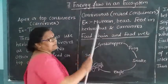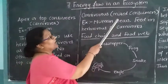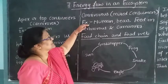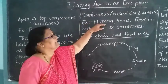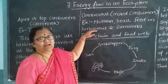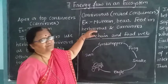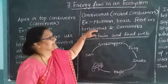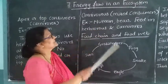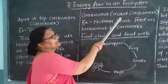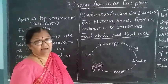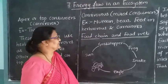Next come the omnivores, which are called mixed consumers. For example, humans or bear. These feed on both herbivorous and carnivorous animals, meaning they eat both plant-eaters and flesh-eaters. So omnivores are the mixed consumers.